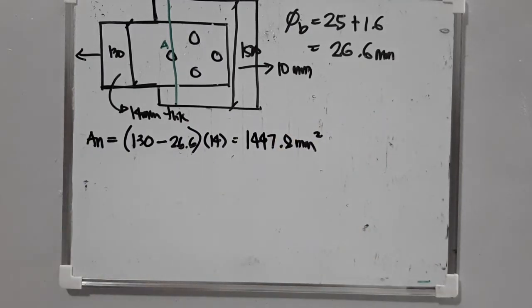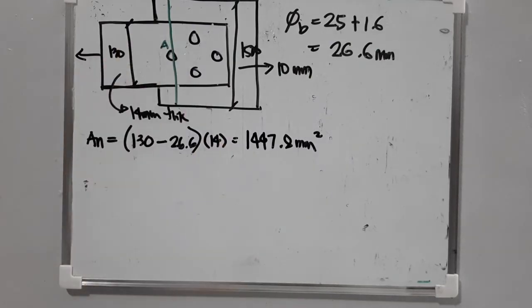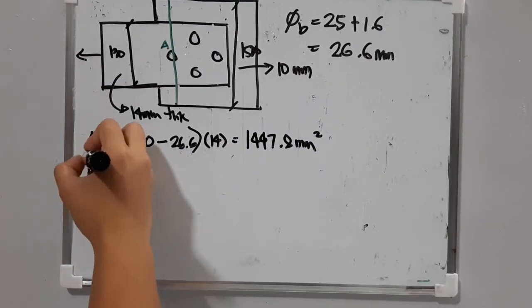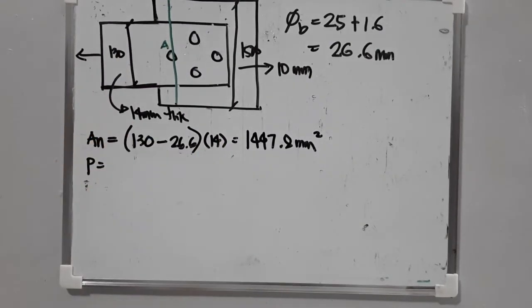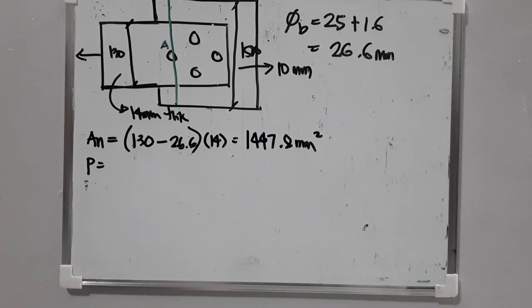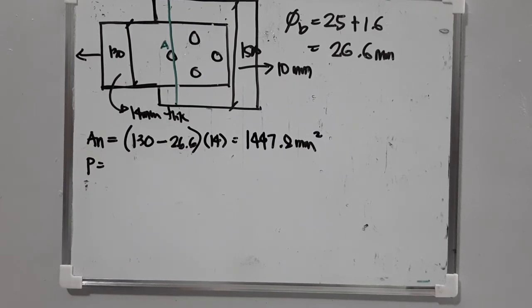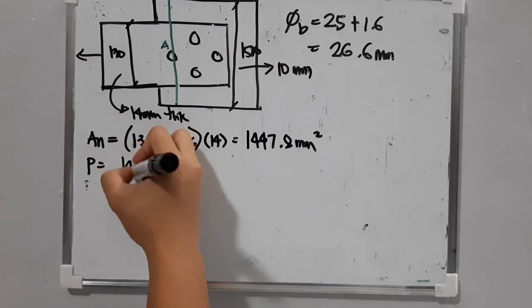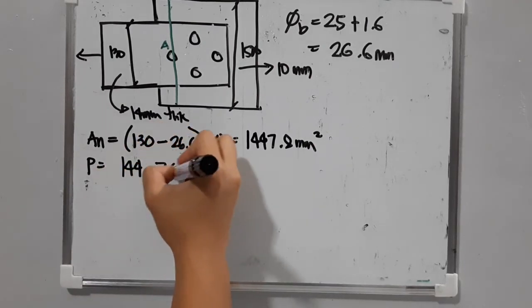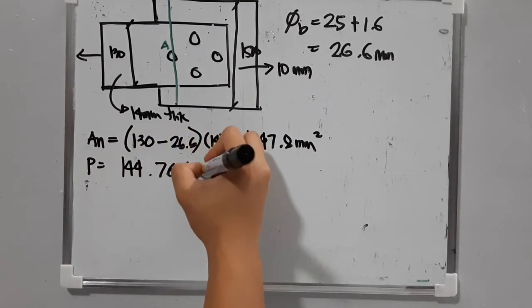With an allowable stress of 100 MPa, the force P equals area times allowable stress: 1,447.8 times 100, giving P equal to 144.76 kN.